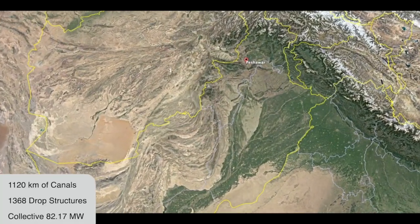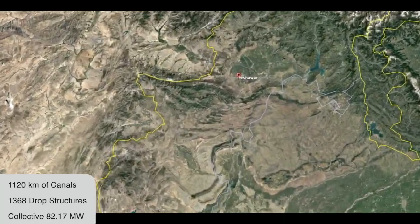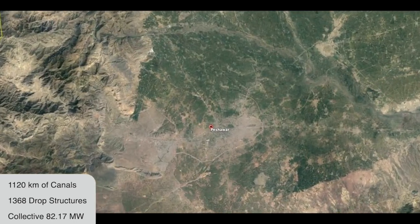There is an abundance of irrigation canals in the Peshawar region, with most having between half and 2.5 meter head range.